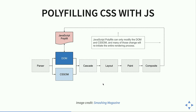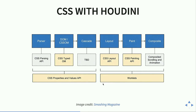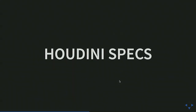Houdini is basically solving this problem of having to edit something at the beginning of the process to achieve something that might only be relevant at the end. In the new diagram with Houdini, all the boxes are blue because we'll have scripting access to all of them. There will be a spec for each one of these steps, grouped into two main categories: the CSS Properties and Values API, and Worklets — either extending CSS or doing custom actions.